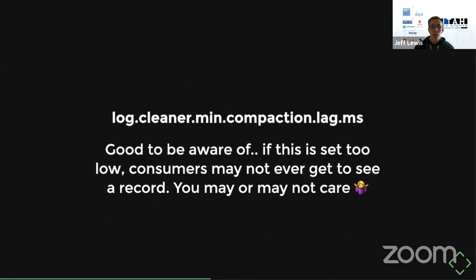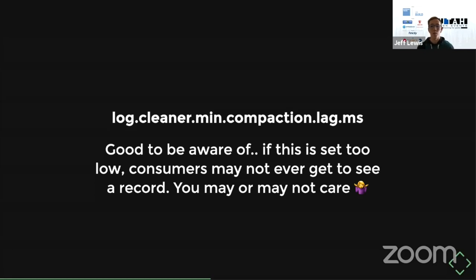One more config relevant to compaction: min.compaction.lag.ms. This defaults to zero milliseconds, meaning a compacted topic could theoretically get compacted the second a record is produced. If a consumer is a bit behind and two records for the same key get produced back to back and then cleaned up, the consumer will only see the second record. If you want to make sure you get all data offloaded elsewhere, set this config to a higher number to give consumers more time to get every record at least once before it gets compacted.